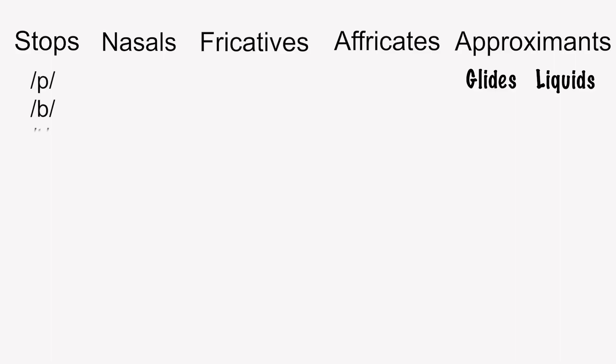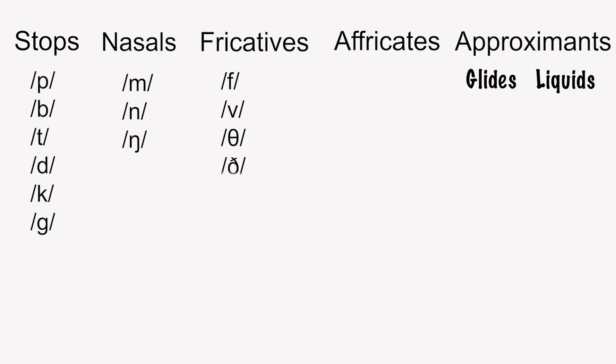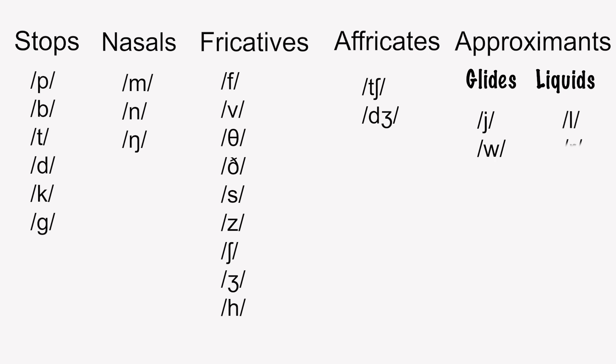Consonants are produced by vocal tract constrictions that shape the air coming from the larynx. Consonant production generally involves the coming together of two articulators to shape the sound as it passes through the mouth and the nose. The consonants of English include p, b, t, d, k, g, m, n, ng, f, v, s, z, sh, zh, h, ch, j, y, w, l, and r.